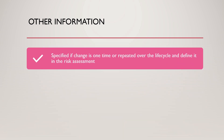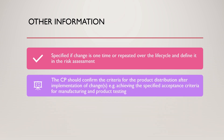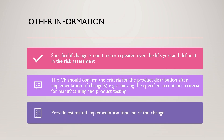The comparability protocol should contain other product-specific information. It should specify if the change is one-time or repeated over the life cycle and define it in the risk assessment. The comparability protocol should confirm the criteria for product distribution after implementation of changes, like achieving the specified acceptance criteria for manufacturing and product testing. Provide the estimated implementation timeline of the change.